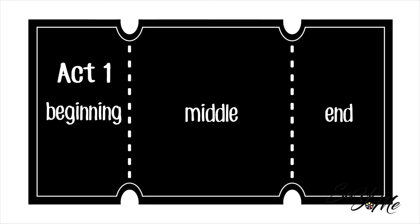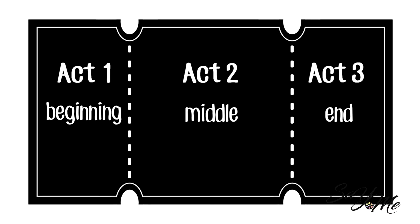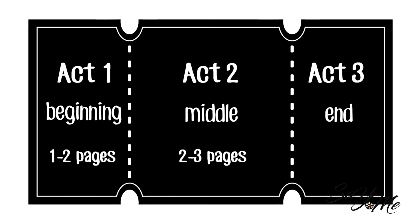As a general guide, Act 1 should be about a quarter of your screenplay, Act 2 half, and Act 3 the final quarter. In pages, that is roughly one to two pages for the beginning, two to three pages for the middle, and another one to two pages for the ending.